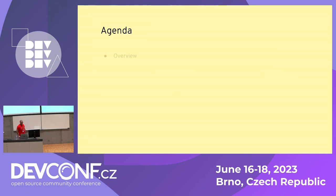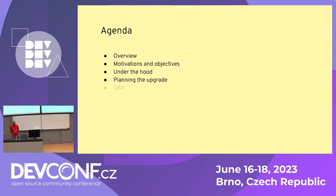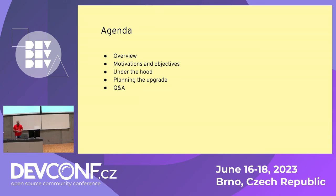On the agenda today, I'm going to give a very brief overview of the Apache Camel project. Then I will talk about the motivations and objectives for releasing a new major version of the framework. I will discuss a bit about the changes under the hood. I'll complement with my thoughts on how you can plan the upgrades, and I'll finish with questions and answers.